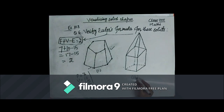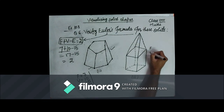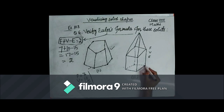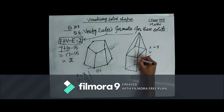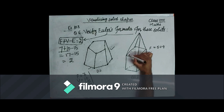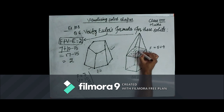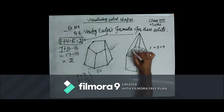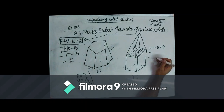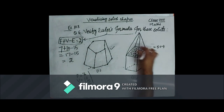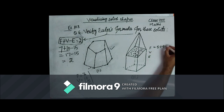In diagram number two, we have to count the number of faces, vertices, and edges. The bottom face plus 4 lateral faces gives 5 faces for the bottom part, plus 4 lateral triangles gives 9. The face inside the diagram cannot be counted as a face. So the number of faces is 9.